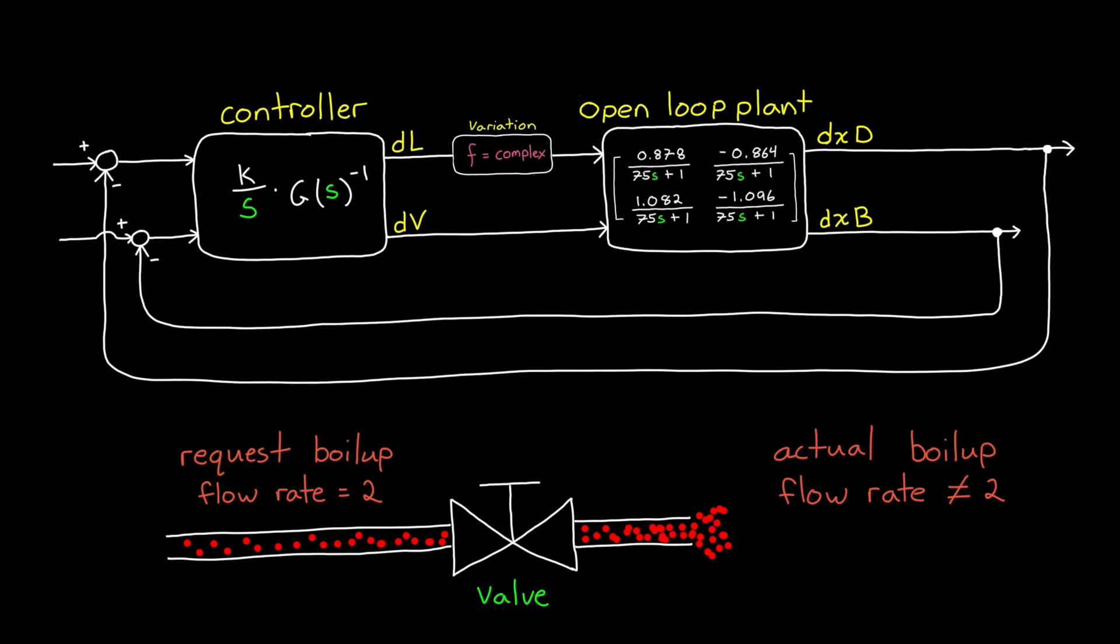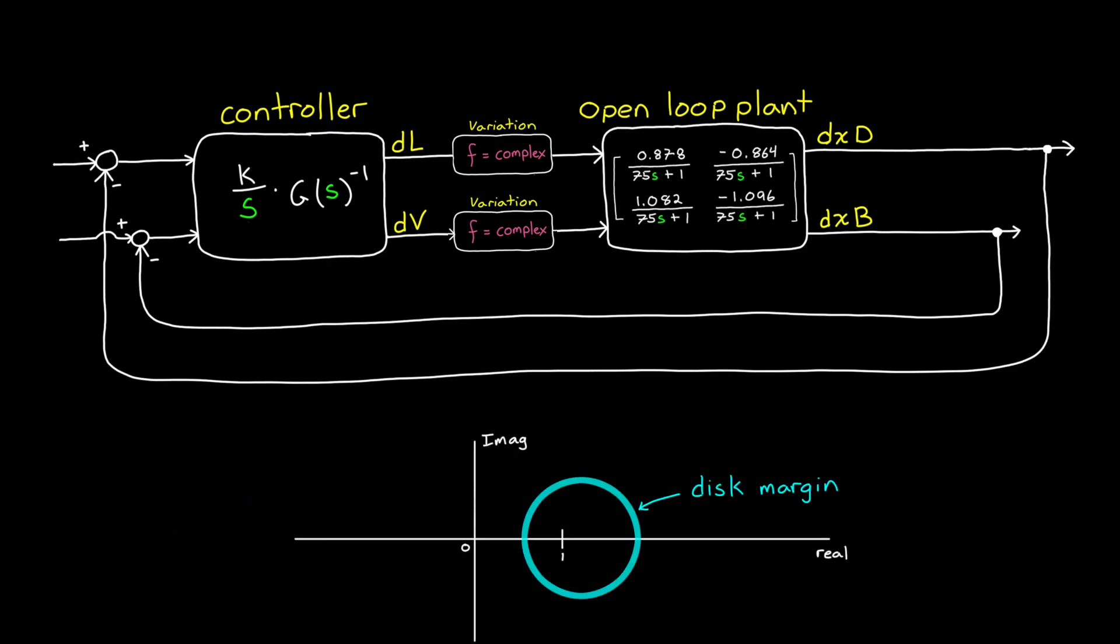But since this is a multi-input system, we may be interested to know if our system is robust to both inputs varying at the same time. That is, reflux and boil up were both perturbed by a different amount of gain and phase. Well, to assess this, we could restrict both perturbations to be within the same set, or within the same disk. Then the disk margin would be the largest disk that if any two independent variations within that disk were applied to the two inputs, the system would still be stable. This is called the multi-loop input disk margin.